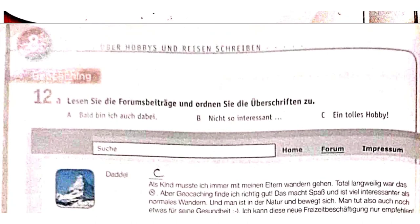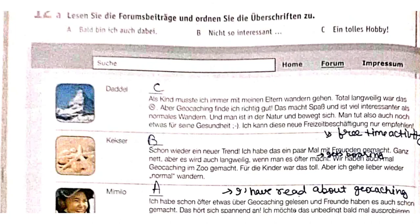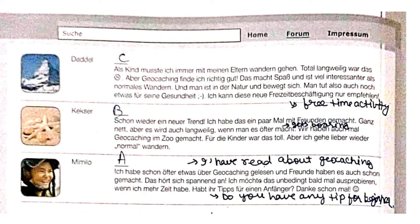Next page, question number 12: we read and arrange — which picture matches which text. In the first picture, it tells us that when I was little I would go with my parents, and it would be boring, but I would do geocaching. Geocaching is a hunting game which we do in real places — like in the jungle there are some objects hidden, and that is geocaching. It was very interesting, very good for health because we were in nature. I would recommend it as a free time activity.